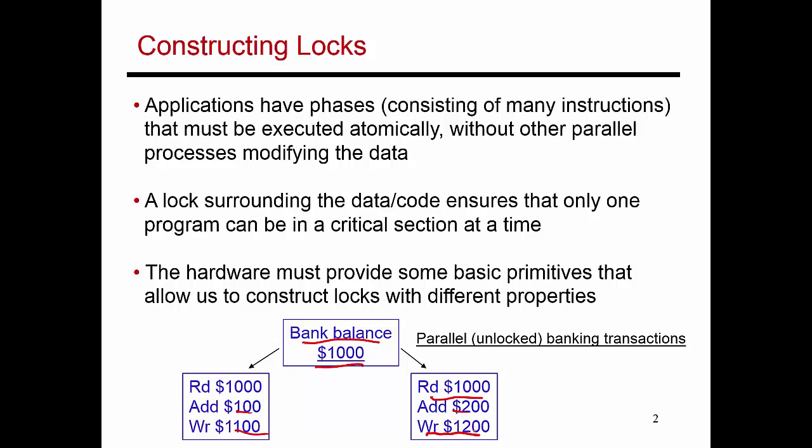Similarly, the thread at the other ATM is trying to do a write of the value $1,200 into that same memory location. It doesn't really matter what happens first — let's assume this write happens first followed by the second write. The net result is that the second write overwrites whatever was done by the first write. So at the end of both transactions, the bank balance has a value of $1,200, which is clearly incorrect. What should have happened is adding $100 to $1,000 followed by adding $200, giving $1,300. Instead, depending on write order, you get an incorrect balance of either $1,100 or $1,200. This is an example of a race condition — multiple threads dealing with the same variable without the right synchronization primitives, producing an incorrect result the programmer did not intend. A race condition is defined by multiple accesses to the same shared variables where at least one access is a write.